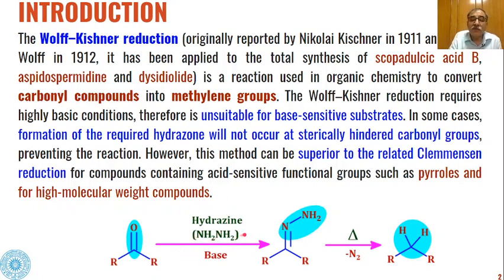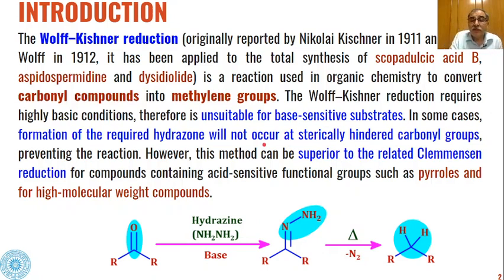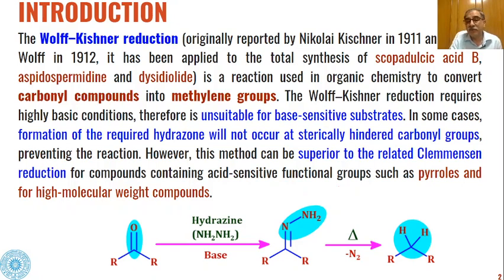In the first step, hydrazine reacts with the oxygen of the carbonyl to give hydrazones. These hydrazones, on heating, undergo elimination of nitrogen gas to give methylene compounds as the product. The main advantage of Wolf-Kishner reduction over metallic counterparts like Clemmensen reduction is that this method can be applied to compounds containing acid-sensitive functional groups such as pyrroles and high molecular weight compounds, whereas Clemmensen reduction cannot be used for acid-sensitive functional groups.